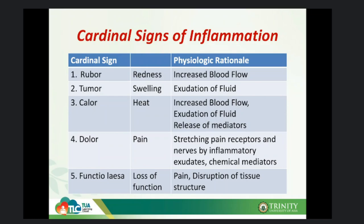Dolor is the presence of pain. The physiologic rationale for pain is that inflammatory exudate and chemical mediators stretch pain receptors and nerves, pressing on nerves due to fluid exudation. Lastly, we have loss of function or functio laesa, caused by pain and disruption of tissue structure, especially with a massive injury, leading to real loss of function in that area. So: rubor is redness, tumor is swelling, calor is heat, dolor is pain, and functio laesa is loss of function.